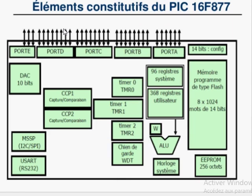Voilà l'architecture interne du circuit. On voit des éléments communs déjà vus dans l'ancien : la mémoire programme, la mémoire EPROM, la mémoire RAM qui constituent des registres spécifiques à usage spécifique, aidant à la configuration de plusieurs registres. Il y a aussi les registres à usage général GPR, l'accumulateur ou registre de travail, l'unité arithmétique et logique, le timer, le chien de garde, le port A et le port B.